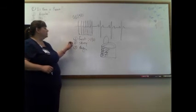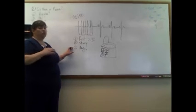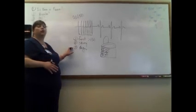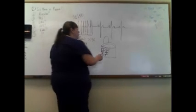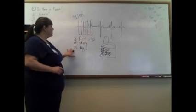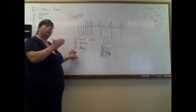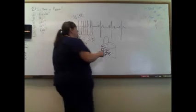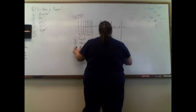Again, with junctional tach, we have fast, we have skinny, we have regular. If we were to slow it down, we'd see that there's no P waves or an inverted P wave, and that would tell us that it was junctional tach. Now the last one that goes in this bucket - we need one other rhythm that's fast, skinny, and regular. Remember I said there's two rhythms that can be either regular or irregular?